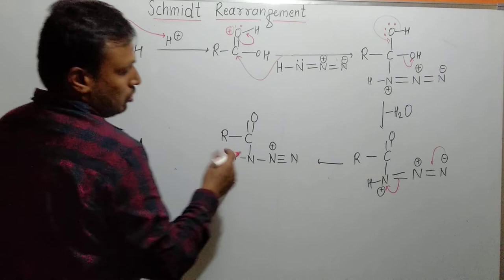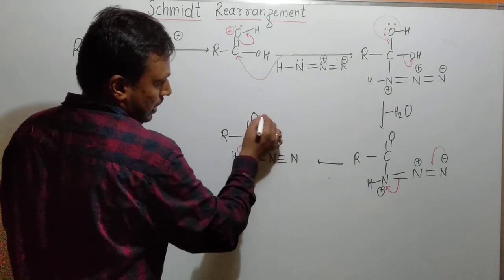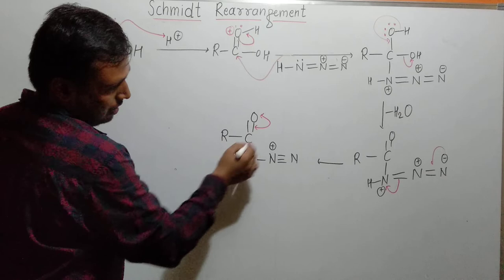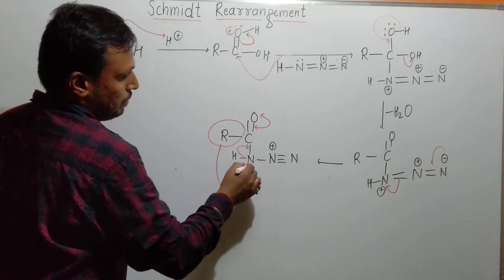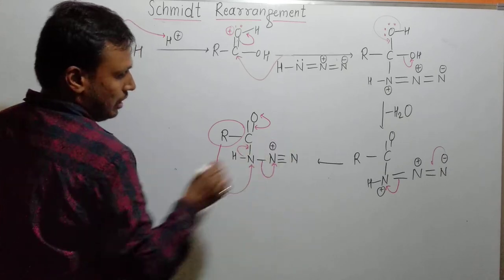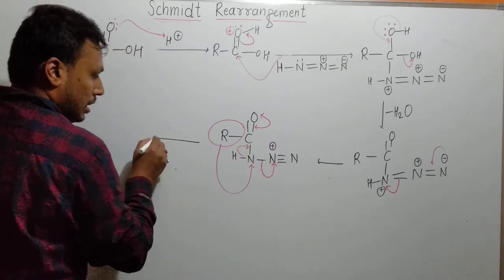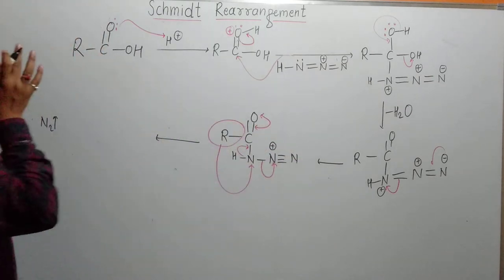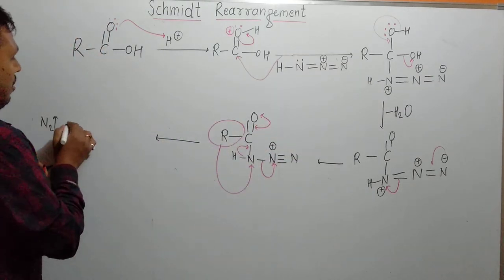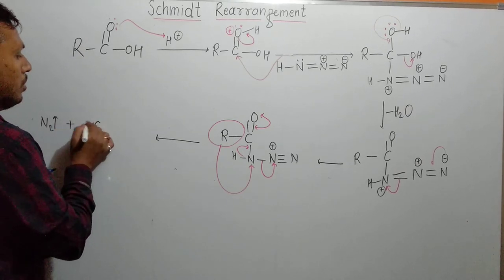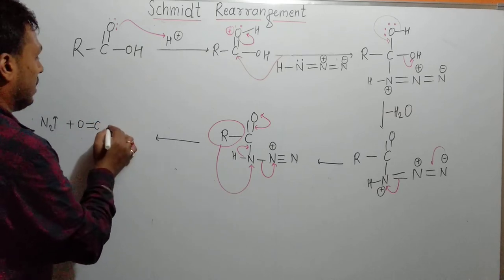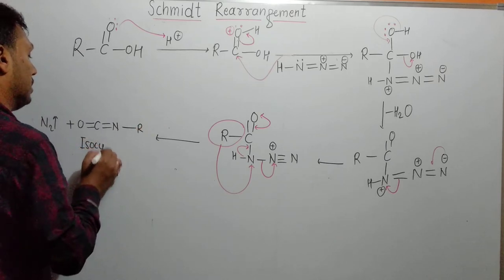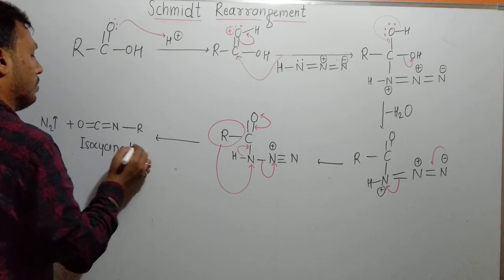Now the electron pair between the nitrogen and nitrogen will shift, forming O⁻. Then this O⁻ will come back in to form the C=O double bond again. At that point, the R group will shift to the nitrogen, and the terminal nitrogen will leave with its electron pair. In this case, N₂ gas is obtained as a side product. Remember: N₂ is the world's best leaving group. So N₂ will leave, and what remains is R-N=C=O, which is called isocyanate.